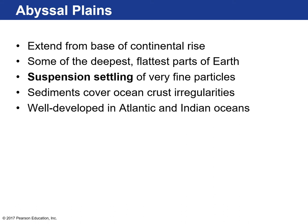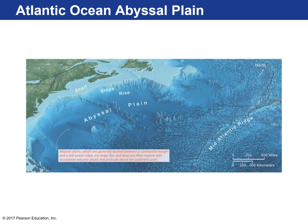Beyond the continental rise are the abyssal plains — the flattest areas on Earth. Sediment arrives there via suspension settling; very fine particles take up to 50 years to settle to the ocean floor, and the average depth is almost four miles. There's a lot of sediment depositing in the abyssal plains, which covers the irregularities of the ocean crust — ocean crust is created by basalt, forming an irregular volcanic rocky crust, but sediment blankets and smooths it over time.